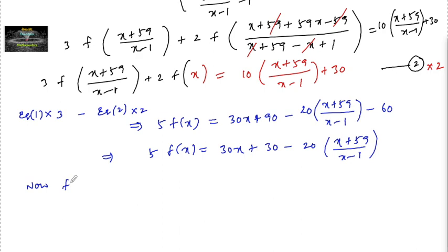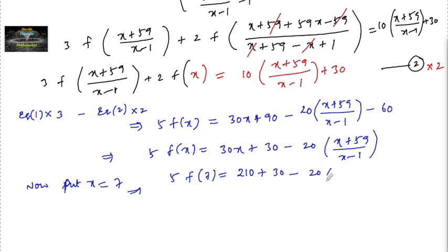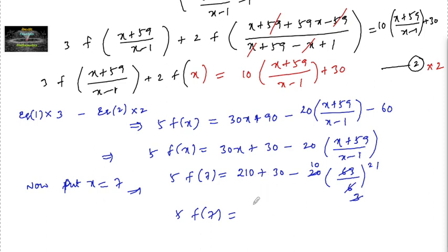Now put x equal to 7. We get 5 times f of 7 equal to 210 plus 30 minus 20 times (7 + 59)/(7 − 1), which is 20 times 66/6, giving 20 times 11, which is 210. So 5 times f of 7 equals 210 + 30 − 210, which is 30. So finally f of 7 equals 6.